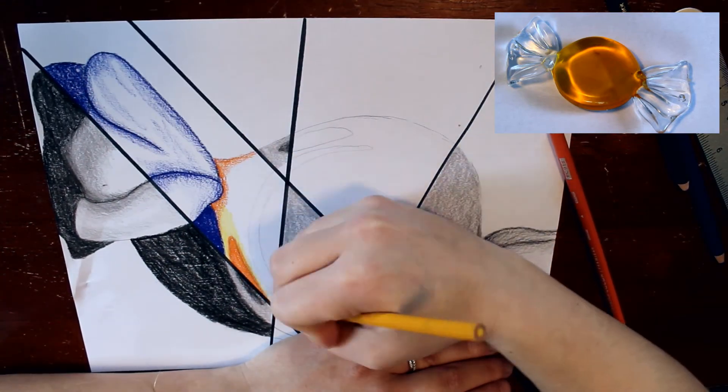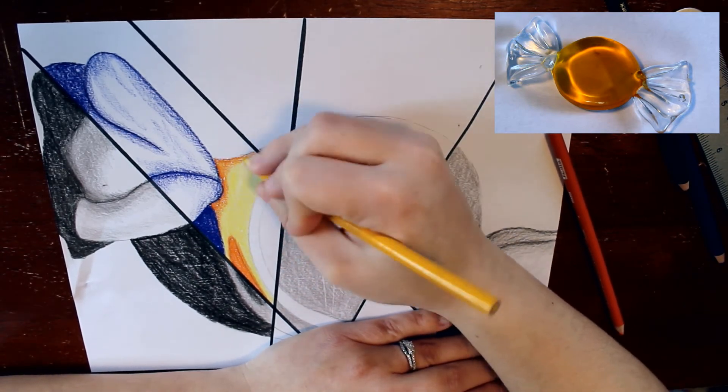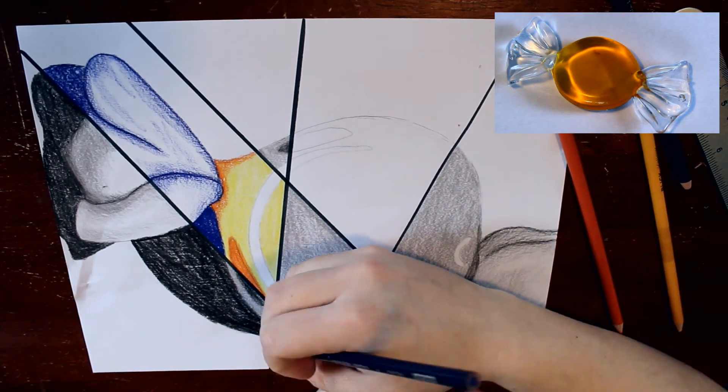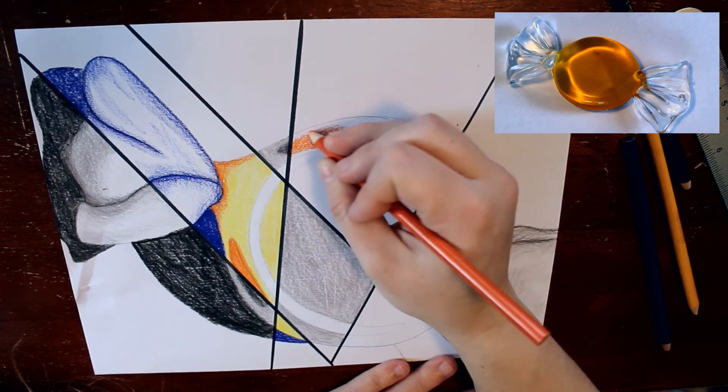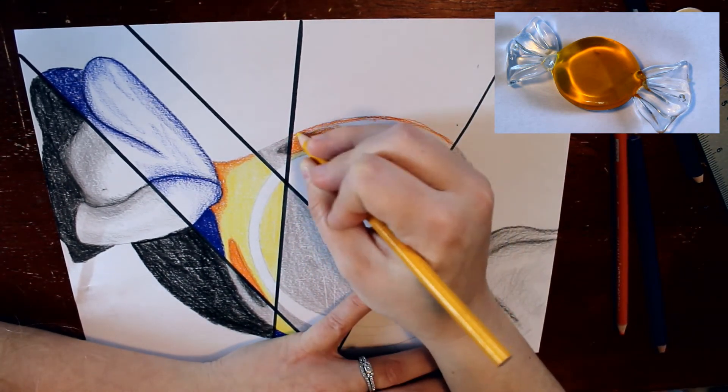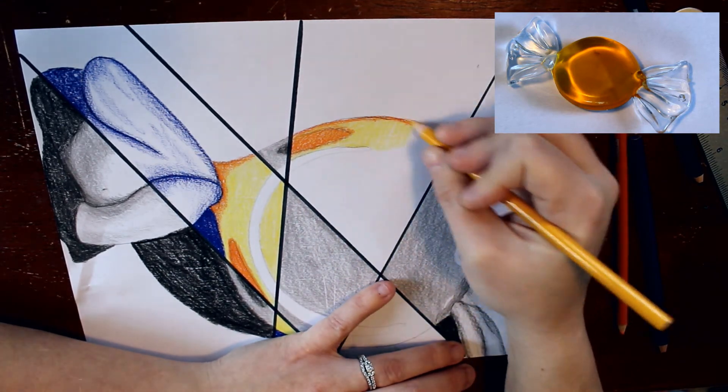For the shadows, instead of using black, go ahead and use a blue color. A lot of times shadows have a little blue tint to them. It's not super obvious in real life, but we're going to make it really obvious in this drawing. And then for any gray areas that I had in the wrapper, I'm going to make those a light blue.